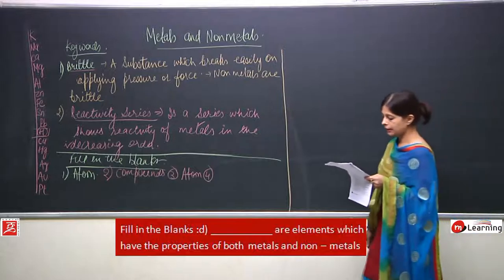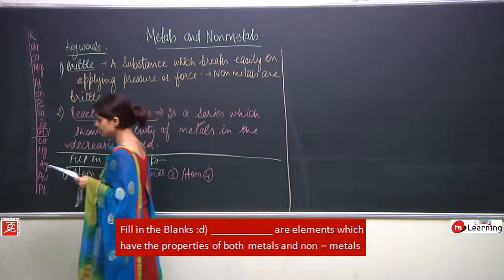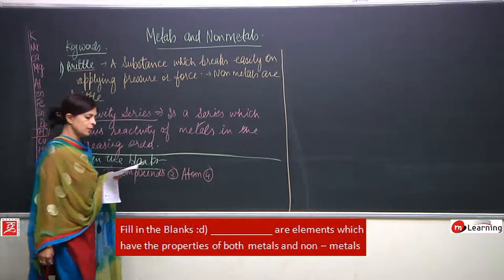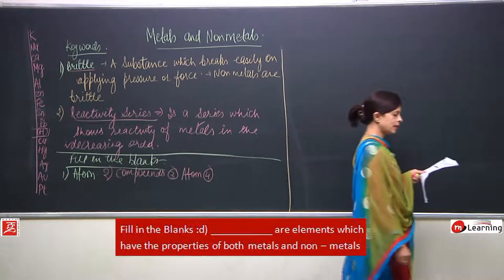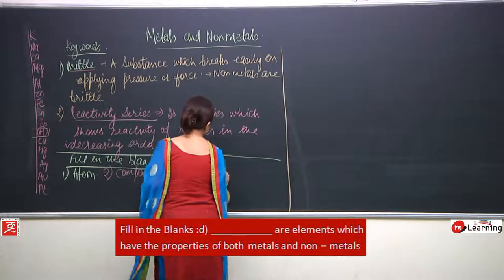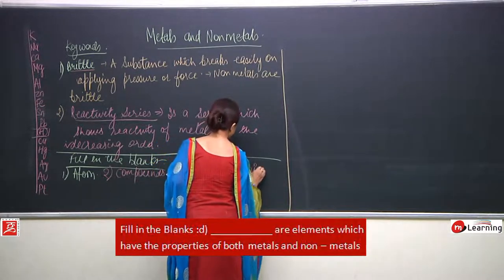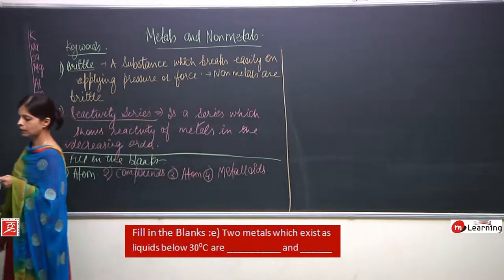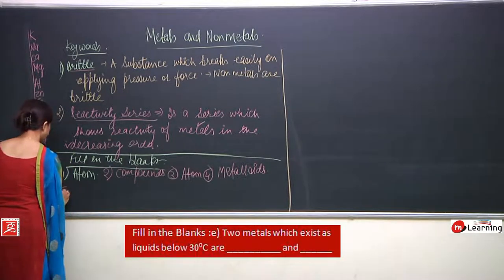Elements which have properties of both metals and non-metals — we all know this — are metalloids. Now come to the fifth one: two metals which exist as liquid below 30 degrees Celsius.